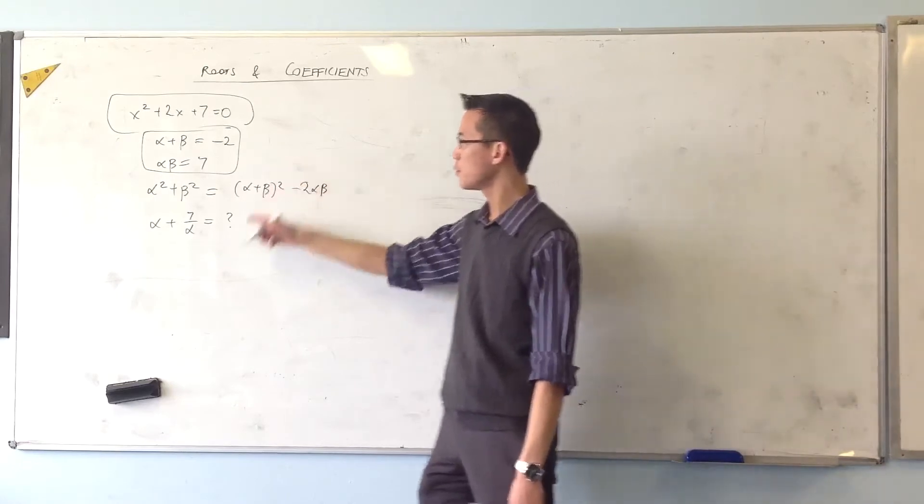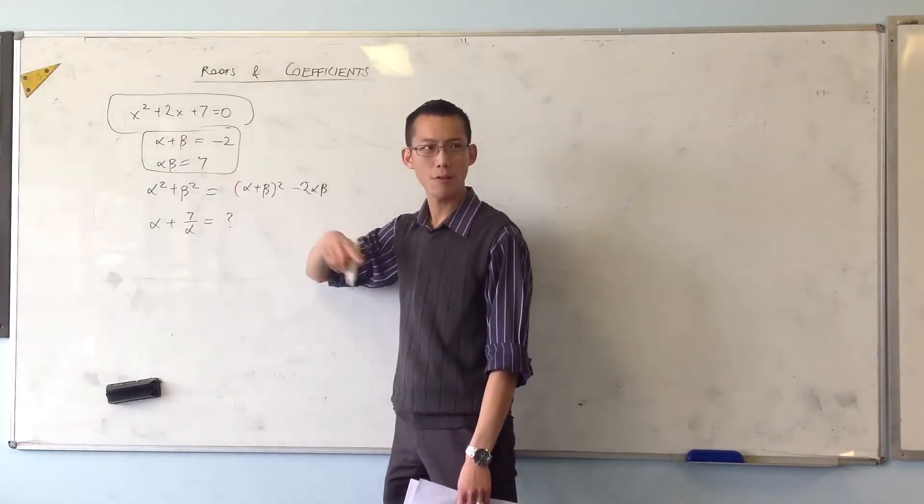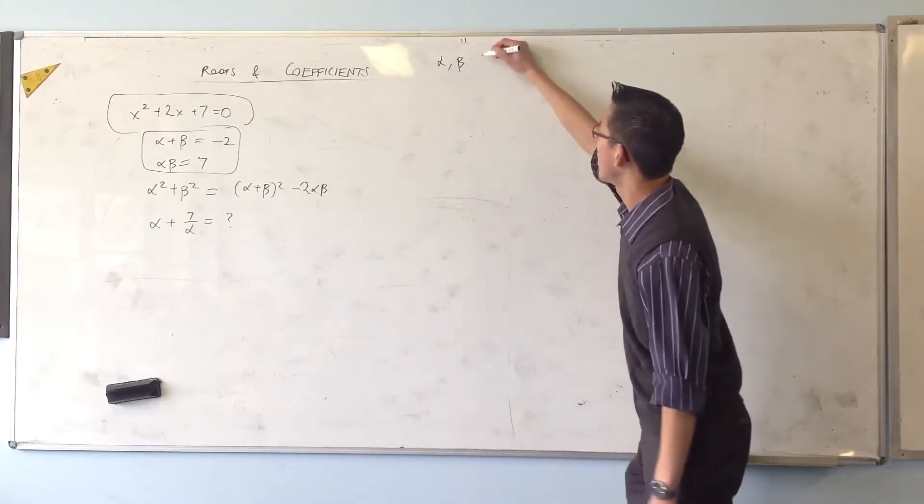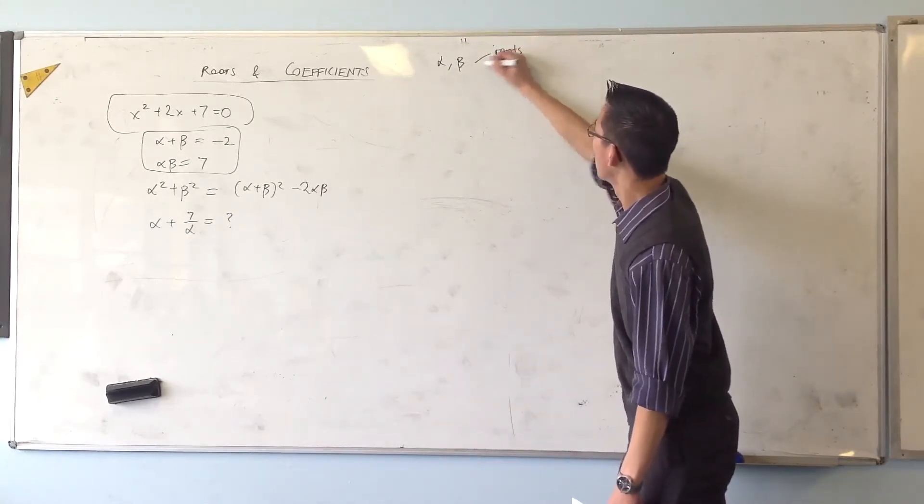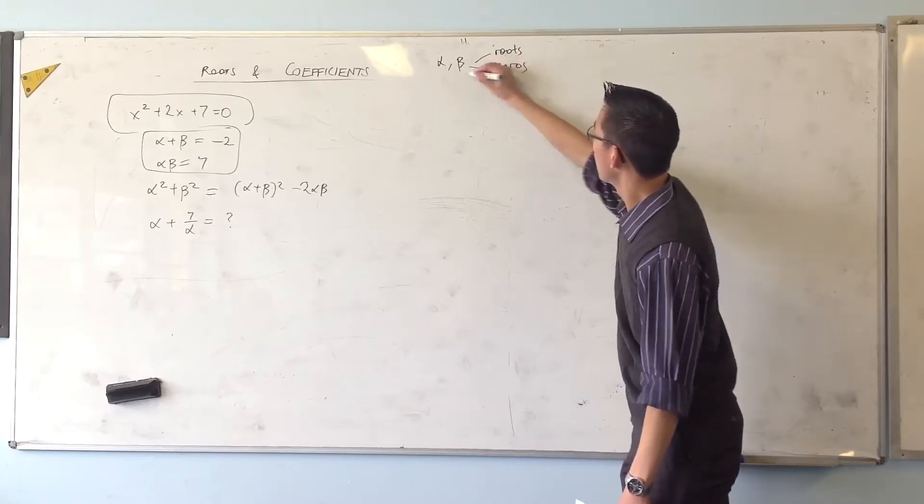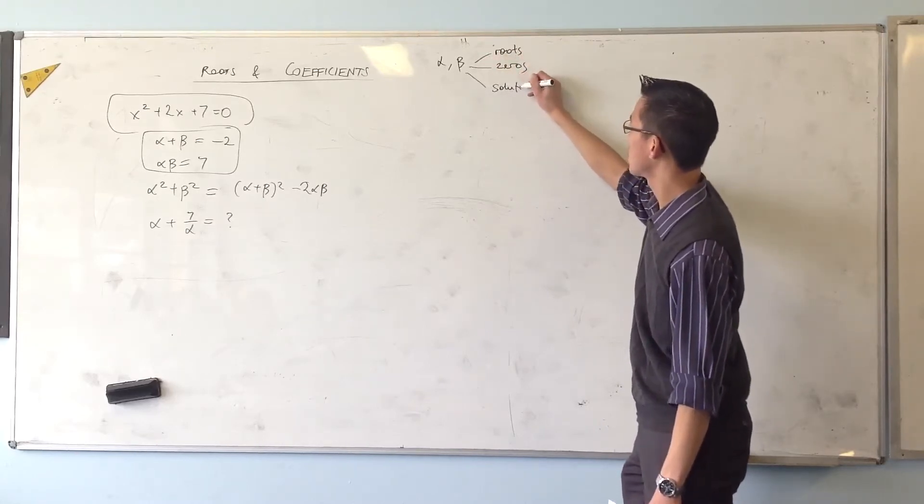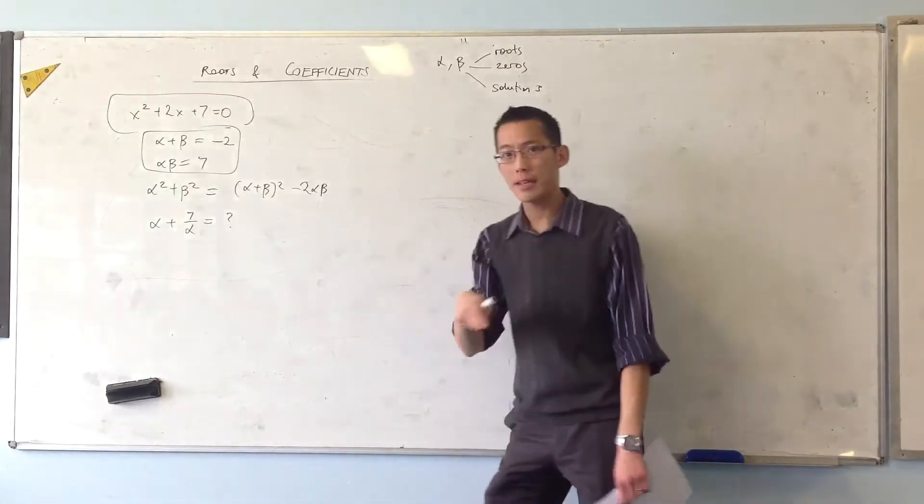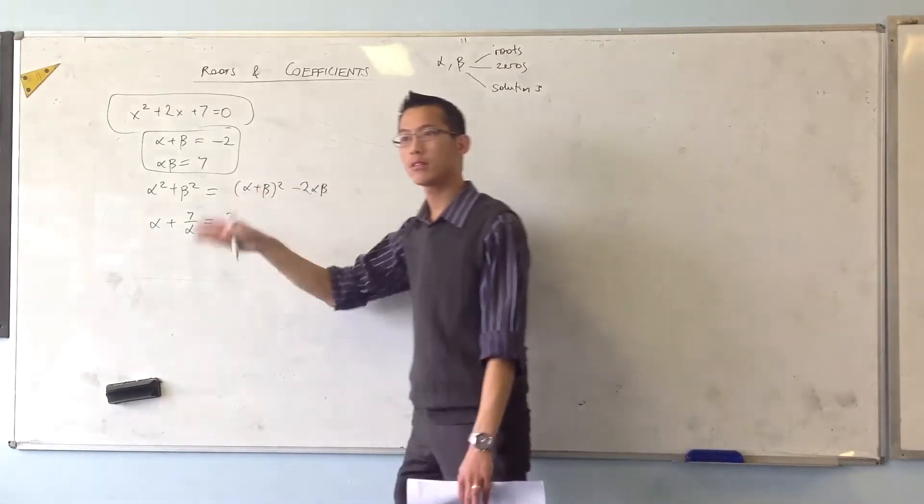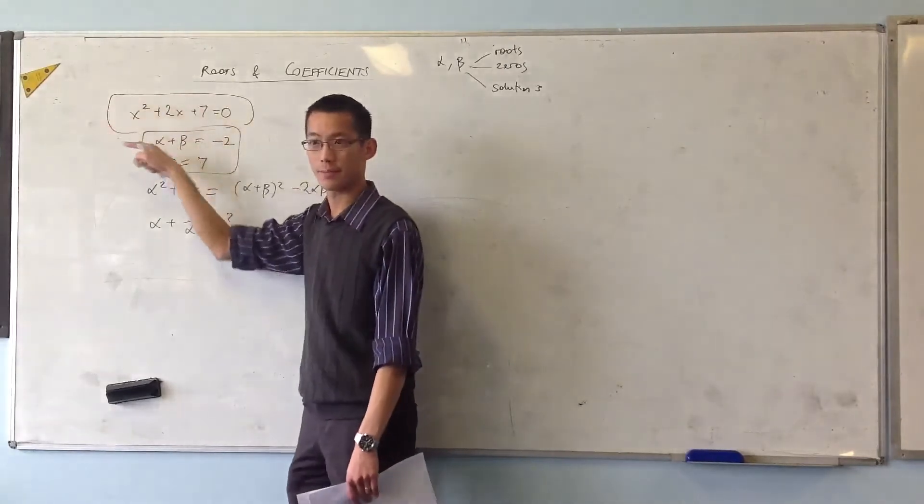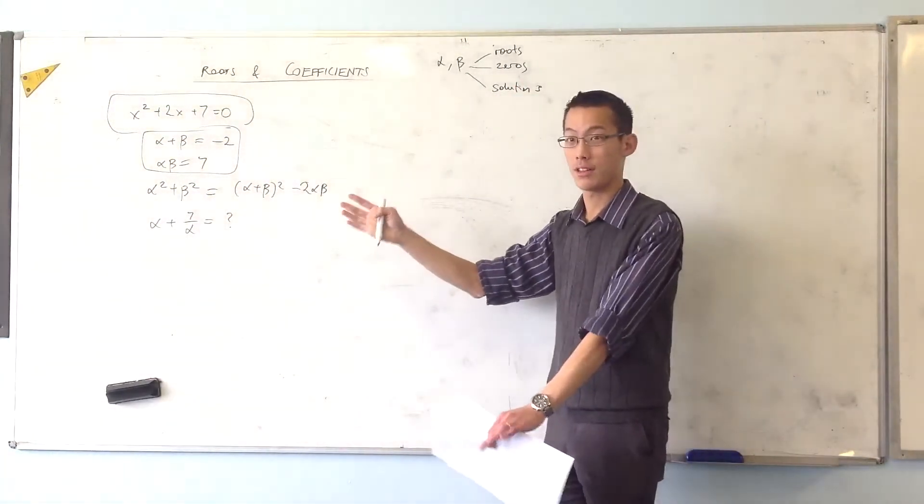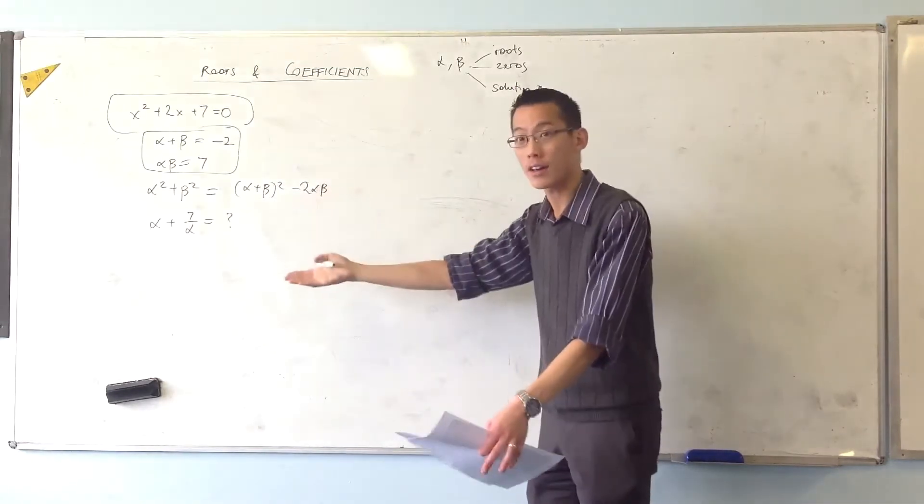Well, remember what are alpha and beta? Alpha and beta, we can say in three ways, right? They are either roots or zeros or solutions. That's the way we talk about these. So what that means is alpha and beta, if I put them into this equation, because they are solutions, they should solve the equation, should make the equation work, right?